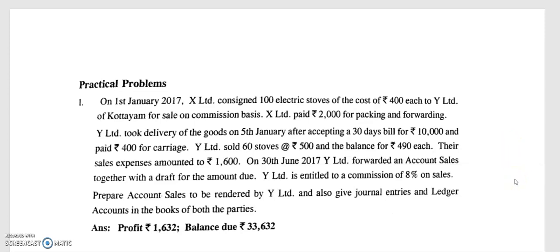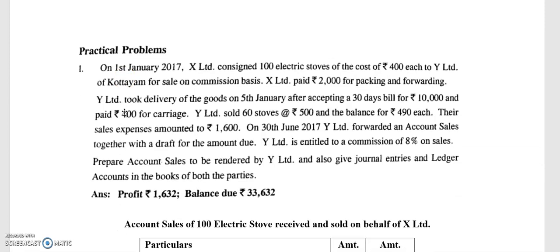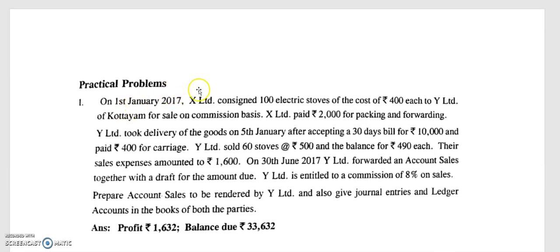In this video I am going to discuss illustration one. We have already discussed illustration one but now we will work it live. The question is about work-life balance accounting. On 1st January 2017, X Limited consigned 100 electric stoves to Y Limited. The consignor is X Limited and the consignee is Y Limited, and the goods are sent for sale on commission basis.